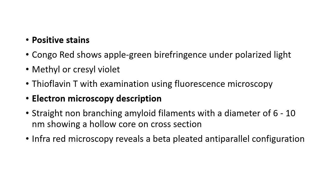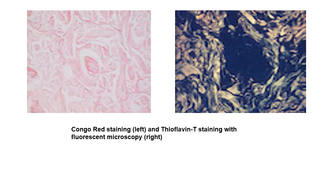The positive stains which we do in primary cutaneous amyloidosis are Congo red, which shows apple green birefringence under polarized light, methyl or crystal violet, and thioflavin T with examination using a fluorescence microscope. In electron microscopy, straight non-branching amyloid filaments are seen with a diameter of 6 to 10 nanometers, showing a hollow core on cross-section. Infrared microscopy reveals a beta-pleated anti-parallel configuration. This picture on the right shows the Congo red staining and thioflavin T staining with fluorescent microscopy.